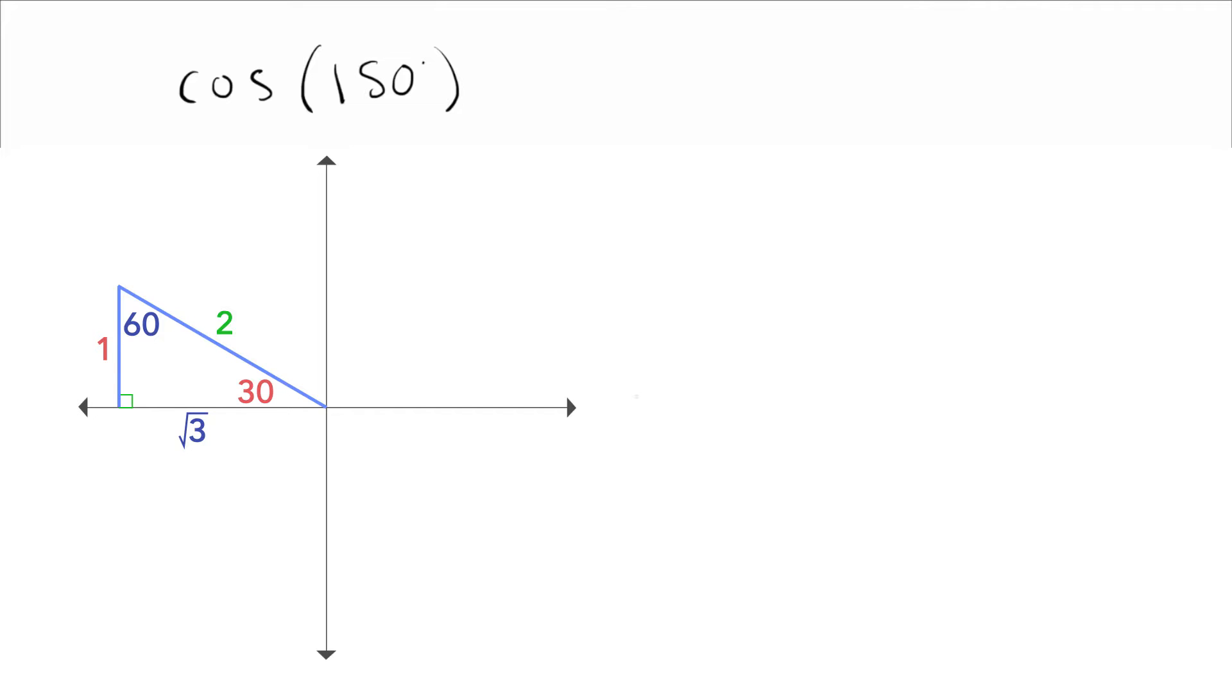And then I look real quick, do any of these need to be negative? And yes, the square root of 3, because I'm going to the left square root of 3. The 1, I'm going up 1, so that can stay positive. Great. And now I can just do cosine, right? Cosine, you find the adjacent side, negative square root of 3, divided by the hypotenuse, 2. And there we go. We did our problem.